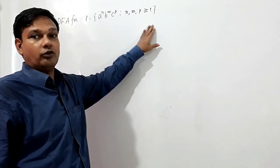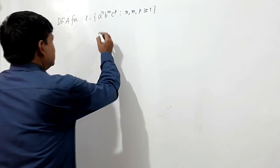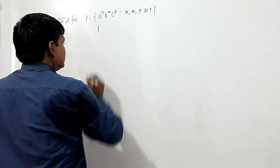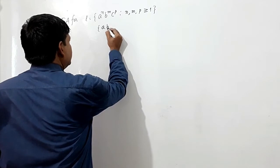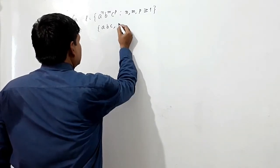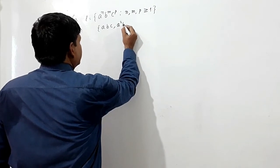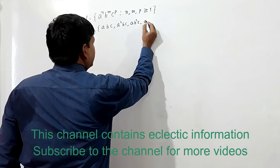m and p is always greater than or equal to 1. So the smallest string which should be accepted will be abc, or a squared bc, or ab squared c, or abc squared.